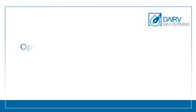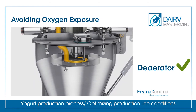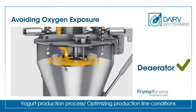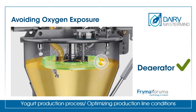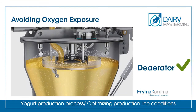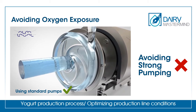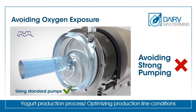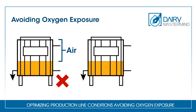Optimizing production line conditions — avoiding oxygen exposure: Due to the sensitivity of TG enzyme to oxygen, it is recommended to use a de-aerator in the production line to reduce the amount of dissolved oxygen. It is also important to prevent strong pumping which can make foam in the milk, avoid unnecessary stirring which increases dissolved oxygen and makes foam, and try to use full tank capacity to avoid leaving part of them free.